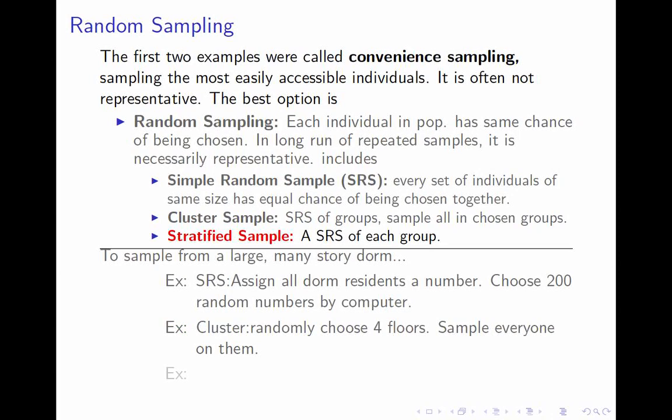A stratified sample is kind of the opposite. Again, you break the population up into groups, but now you take a small simple random sample from each of those groups. This is usually done to maintain balance. If the population divides naturally into groups and you want to make sure you get the right number in each group, you'll do a stratified sample. For example, I might decide it's really important that I get as many men as women, so I'd take a sample of 100 men and 100 women. It doesn't generally save effort — in fact it's probably more — but it guarantees balance in that regard.